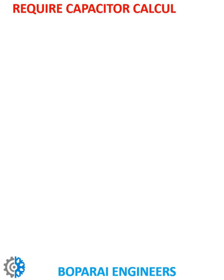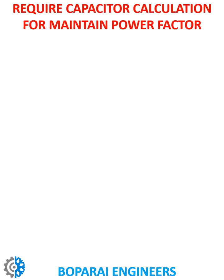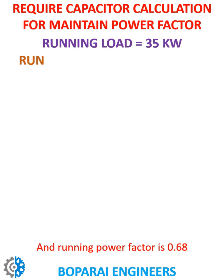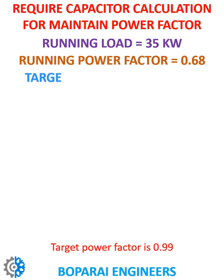We require a capacitor calculation to maintain power factor. Suppose your running load is 35 kW and the running power factor is 0.68. The target power factor is 0.99.